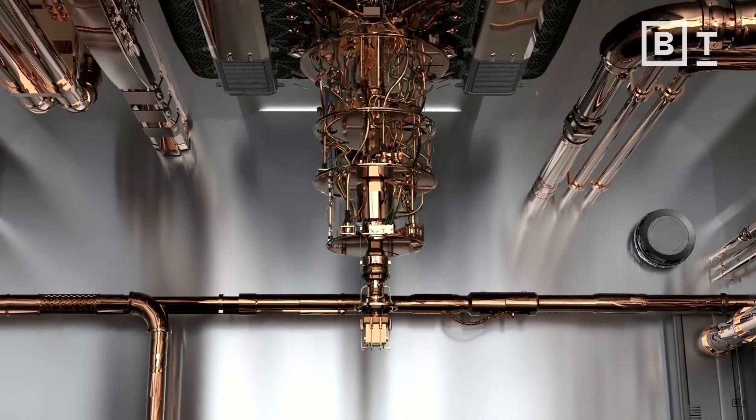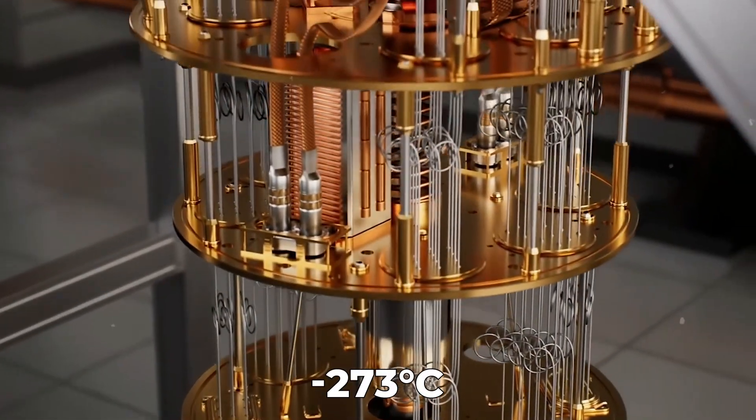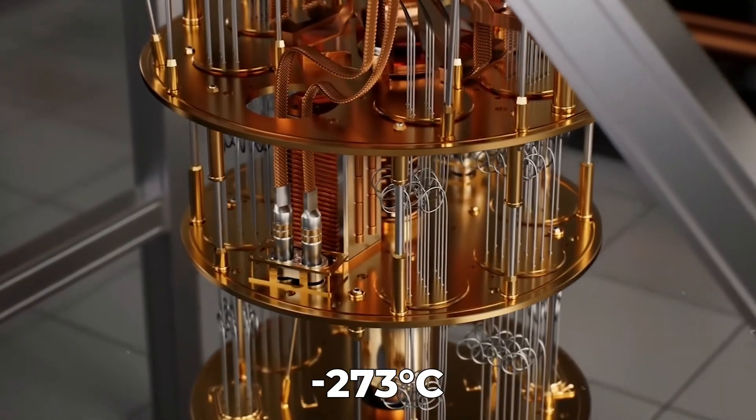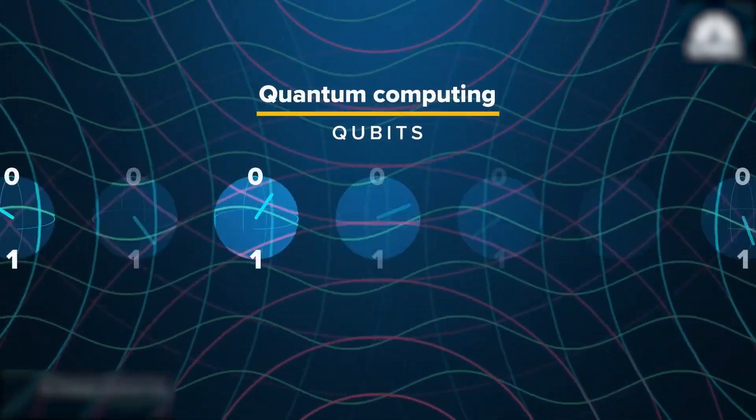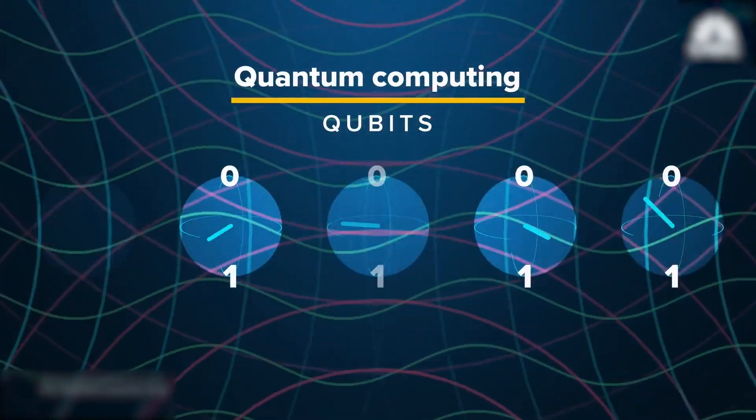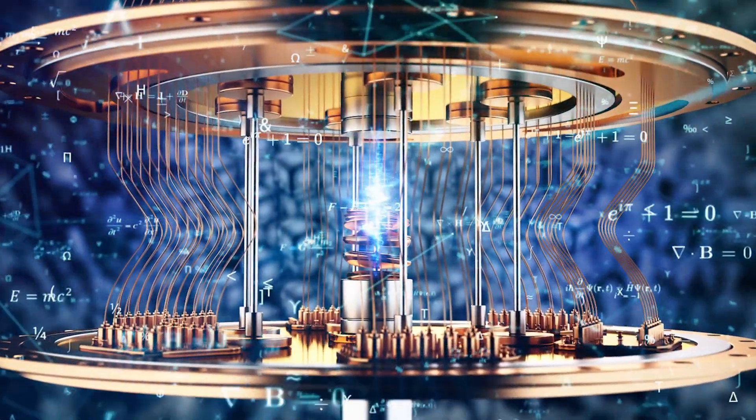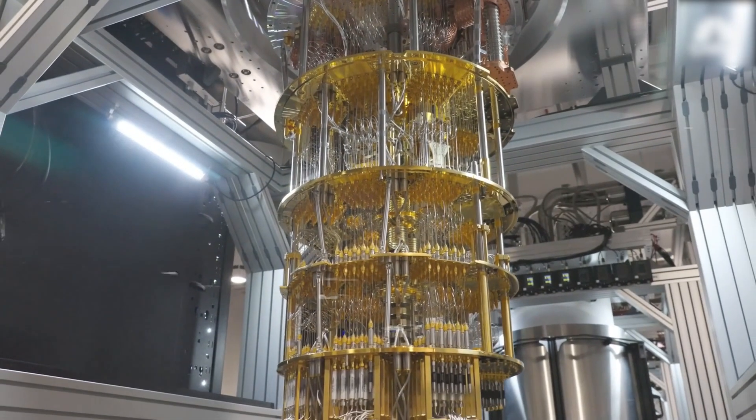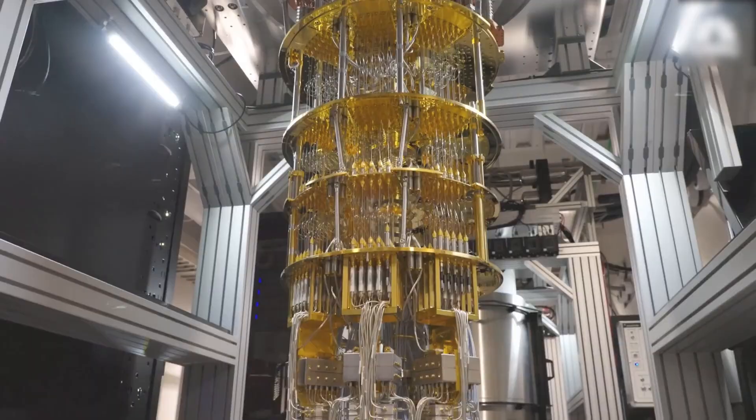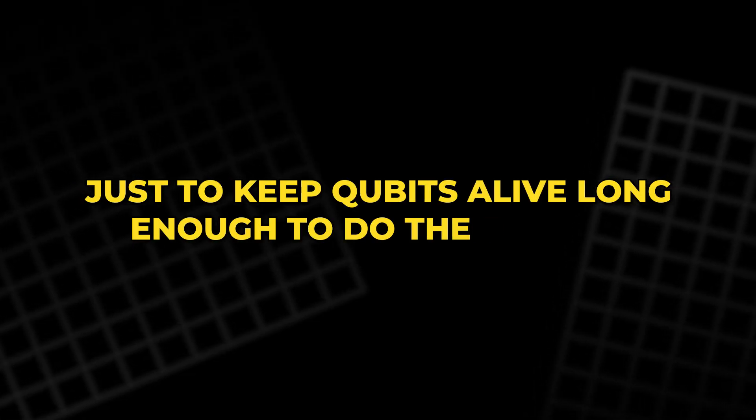The chandelier structure is actually a complex refrigeration unit, gradually stepping down the temperature until the core reaches a fraction of a degree above minus 273 degrees Celsius. Without this chilling system, the qubits would lose coherence in microseconds, and the computation would collapse. These machines look strange because they're fighting a constant battle against the universe itself, just to keep qubits alive long enough to do their magic.